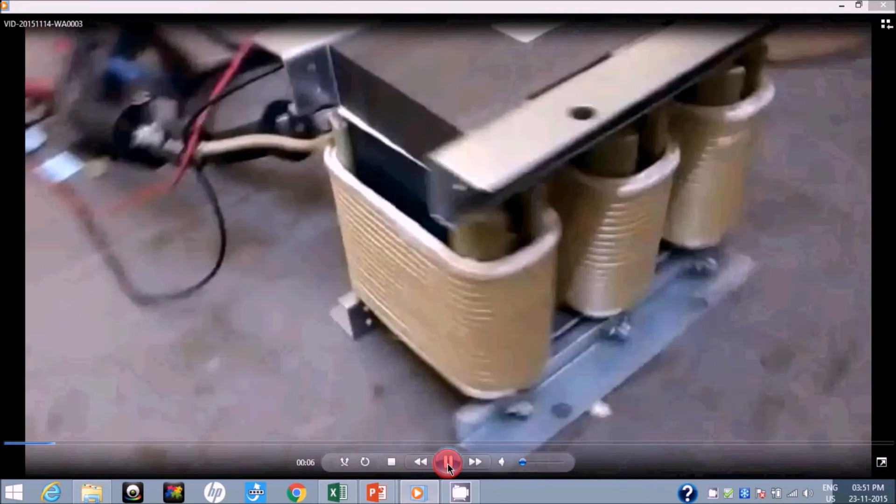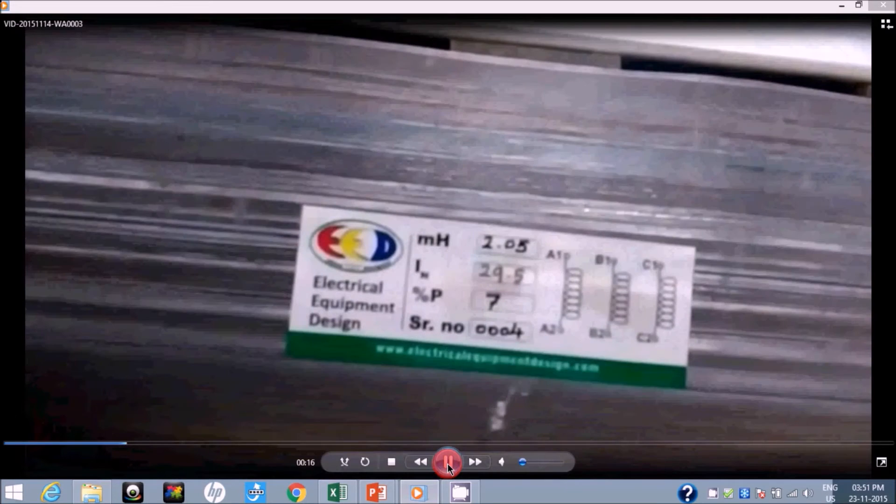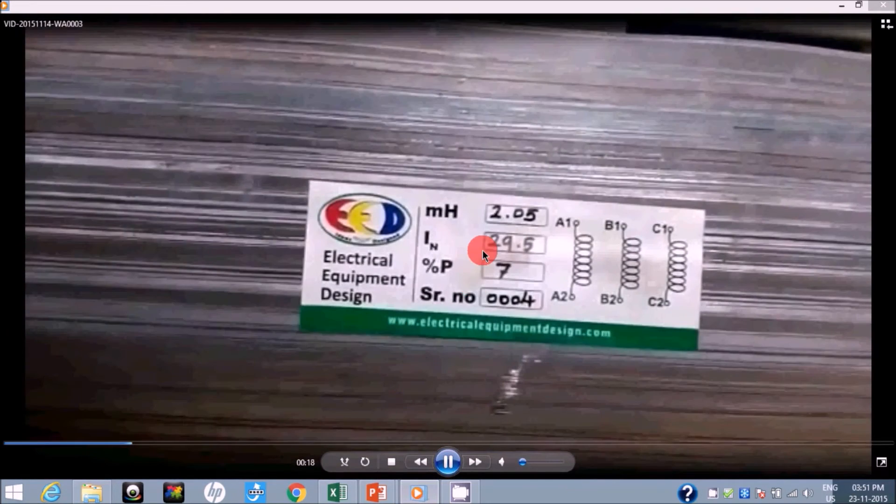Now this setup has been made wherein we are going to test a reactor that is tuned to 7 percent for 25 kVAR at 480 volts. You can see these values, 29.5 ampere. So now this reactor is expected to develop a voltage of 19.6 volts at 29 ampere.